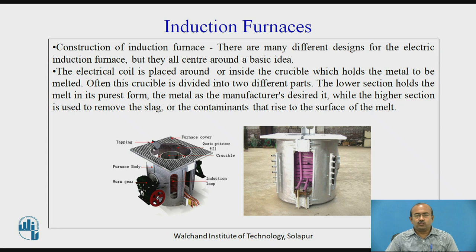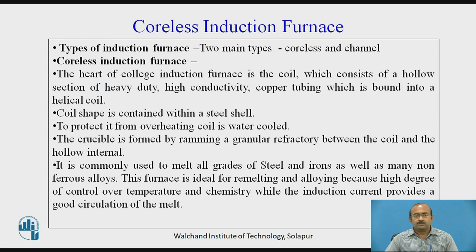Images of actual induction furnaces are shown. There are two main types: coreless and channel. The heart of the coreless induction furnace is the coil, which consists of hollow sections of heavy-duty, high-conductivity copper tubing wound into a helical coil contained within a steel shell. The coil is water cooled to protect it from overheating. The crucible is formed by ramming granular refractory material between the coil and the hollow interior. It is commonly used to melt all grades of steel and iron, as well as many non-ferrous alloys.